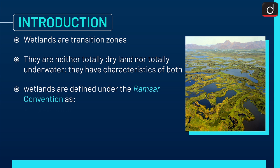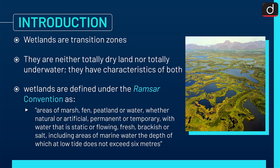Wetlands are defined under the Ramsar Convention as areas of marsh, fen, peatland or water, whether natural or artificial, permanent or temporary, with water that is static or flowing, fresh, brackish or salt, including areas of marine water the depth of which at low tide does not exceed six meters.